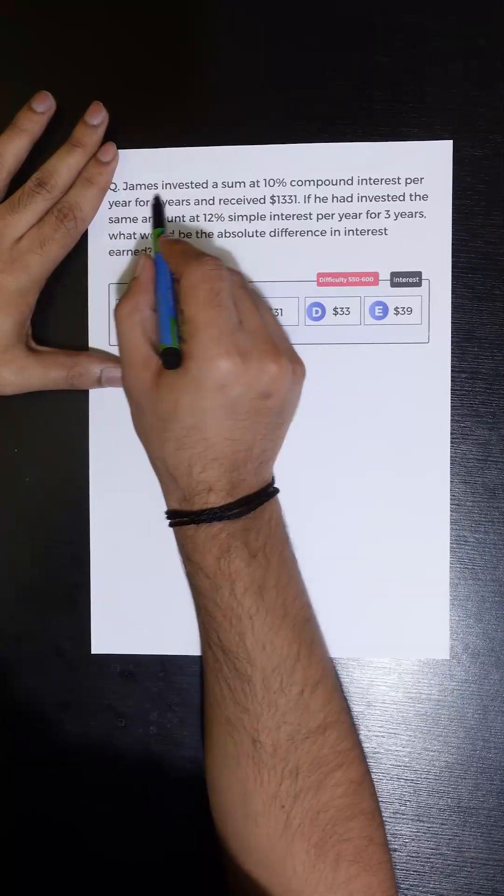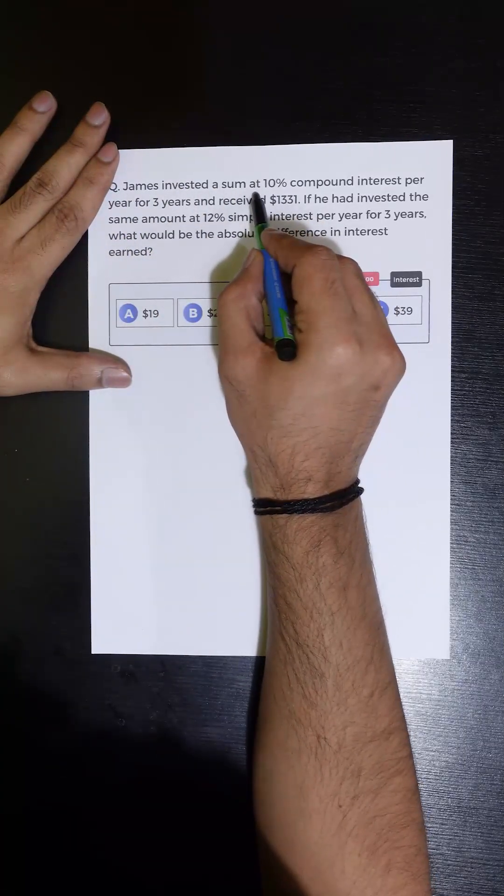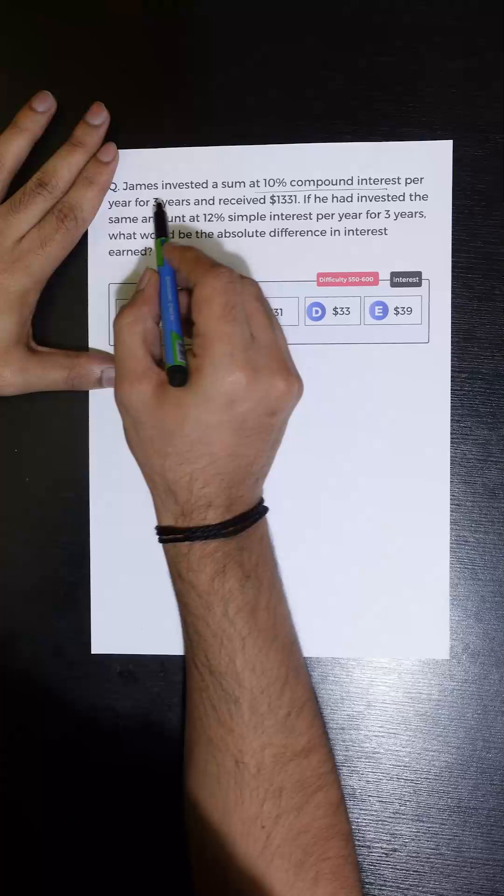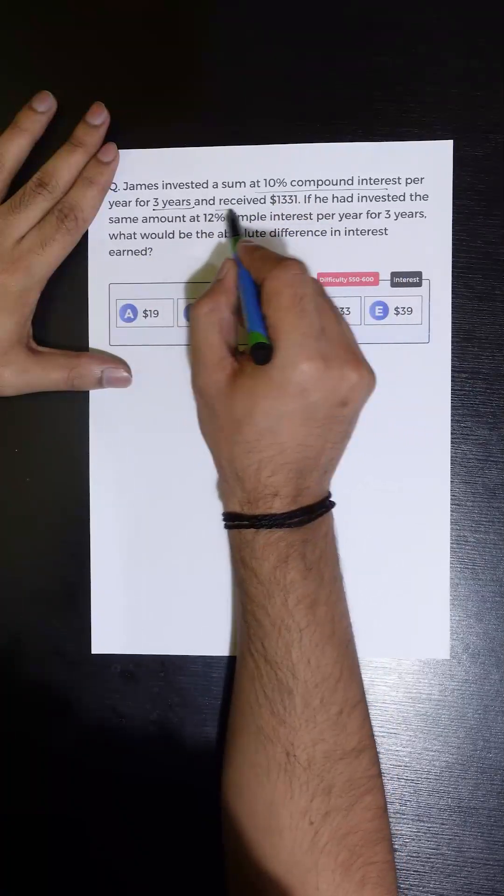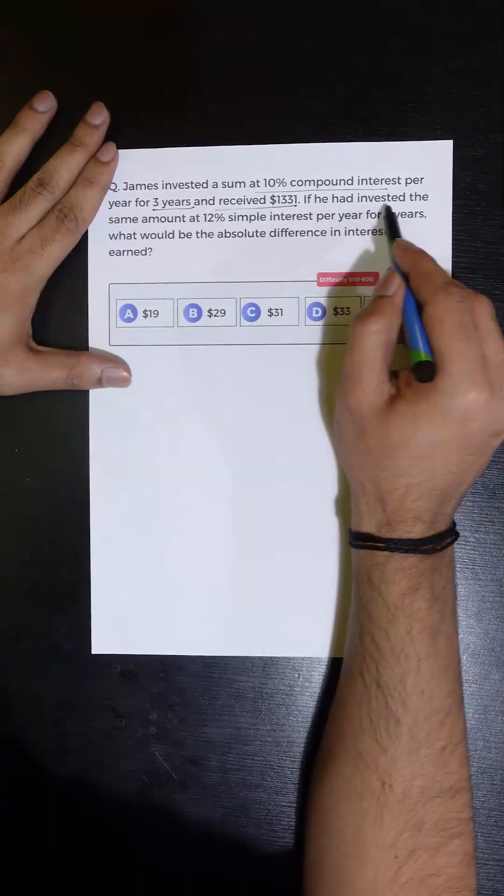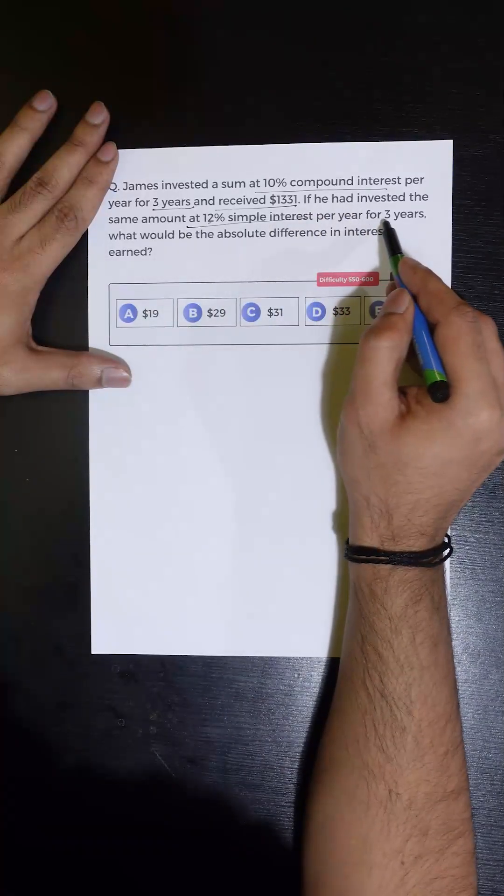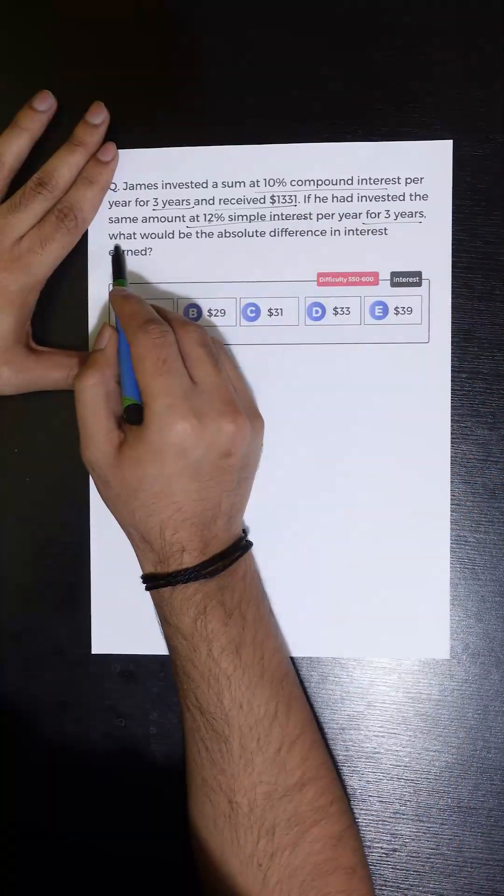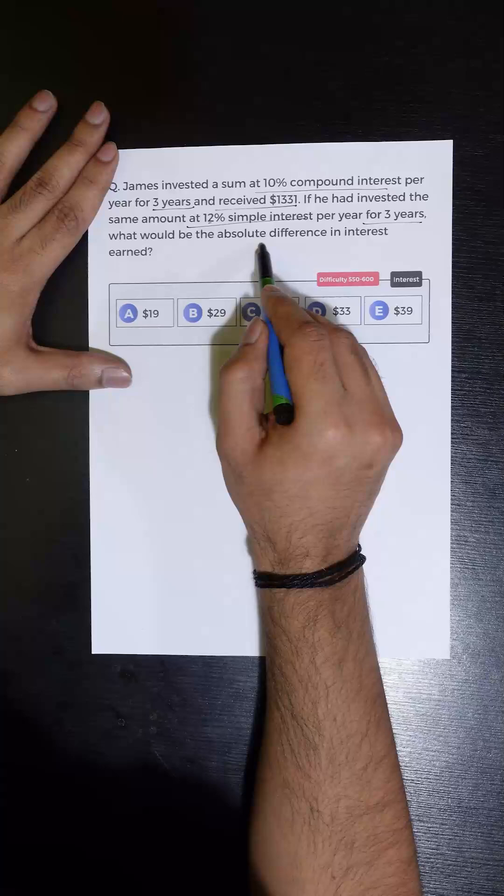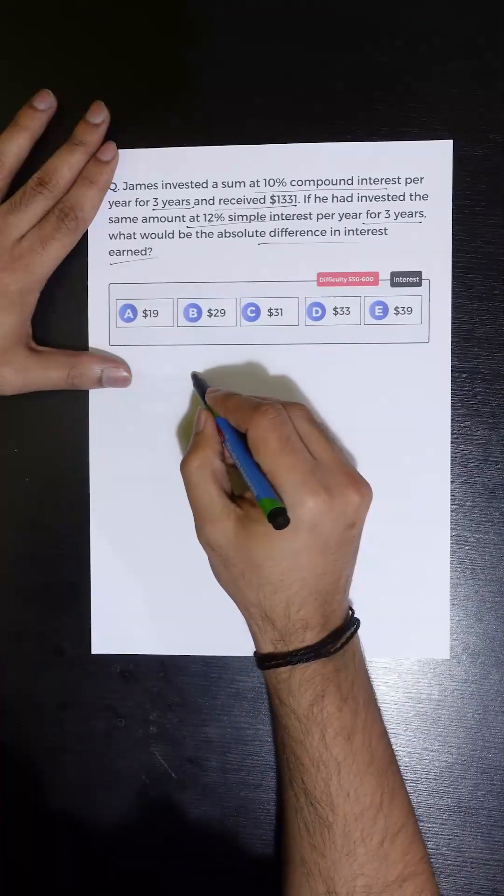Let us see how to solve this question. James invested a sum at 10% compound interest per year for three years and received 1331. If he had invested the same amount at 12% simple interest per year for three years, what would be the absolute difference in the interest? So in the first case...